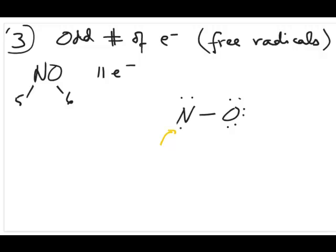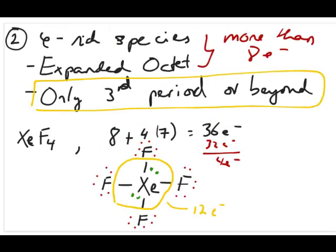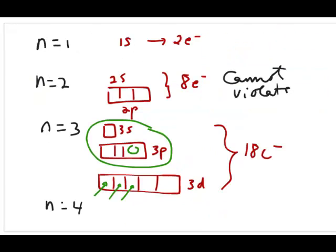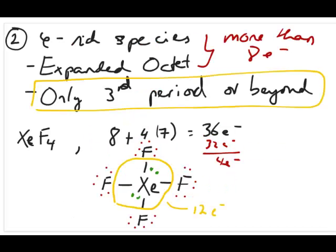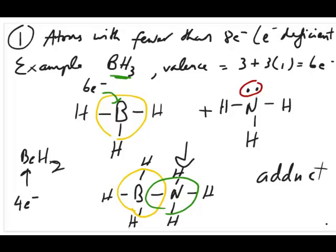These three are the exceptions you have to remember. For odd numbers of electrons, the Lewis model simply fails. For electron-rich species, you can have more than 8 electrons — explained by the availability of d orbitals in the third period or beyond. And lastly, there are some species that can actually have fewer than 8 electrons and yet still be stable, which the Lewis model cannot fully explain.